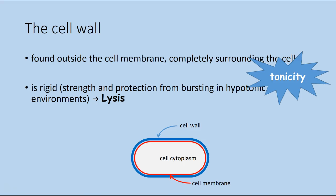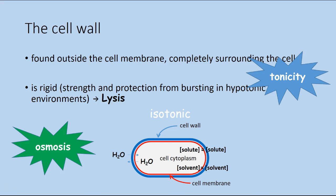Tonicity refers to the solute concentration outside a cell in relationship to the concentration found inside the cell. If a cell is in an isotonic solution, that means the environment outside the cell has the same concentration of solute as found inside the cell. Water concentrations are also equal. Osmosis is the net movement of water across a semi-permeable membrane from high to low concentration. In an isotonic solution, the net movement of water across the membrane is zero — it's at equilibrium. A bacterial cell will easily grow and replicate in an isotonic solution as long as all other essential conditions are met.